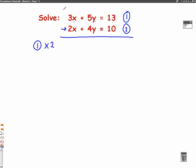If we take this whole first equation, times everything by 2, we'll get 6x plus 10y equals 26. So as you can see there, I times everything by 2.